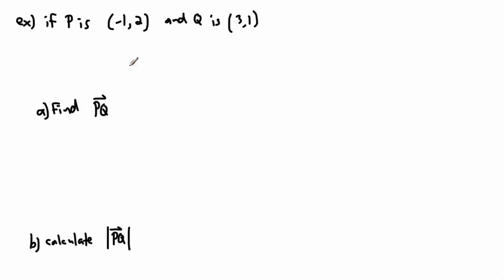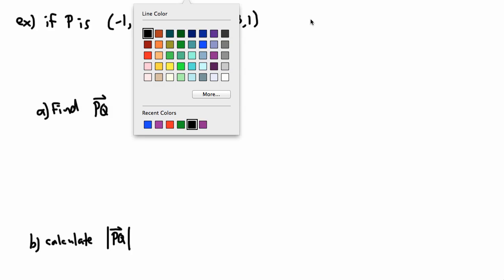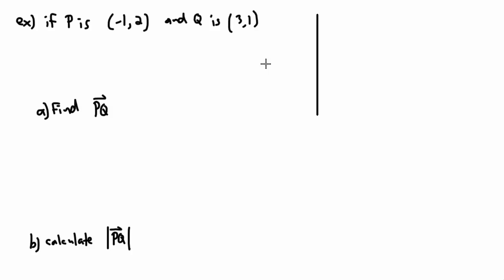Let's try to draw this vector. Let me draw my coordinate system with x and y axes. Point P is at negative one and two, so negative one plus two - there's P. Now we also have Q at three and one, so there's Q. We've got our two points.